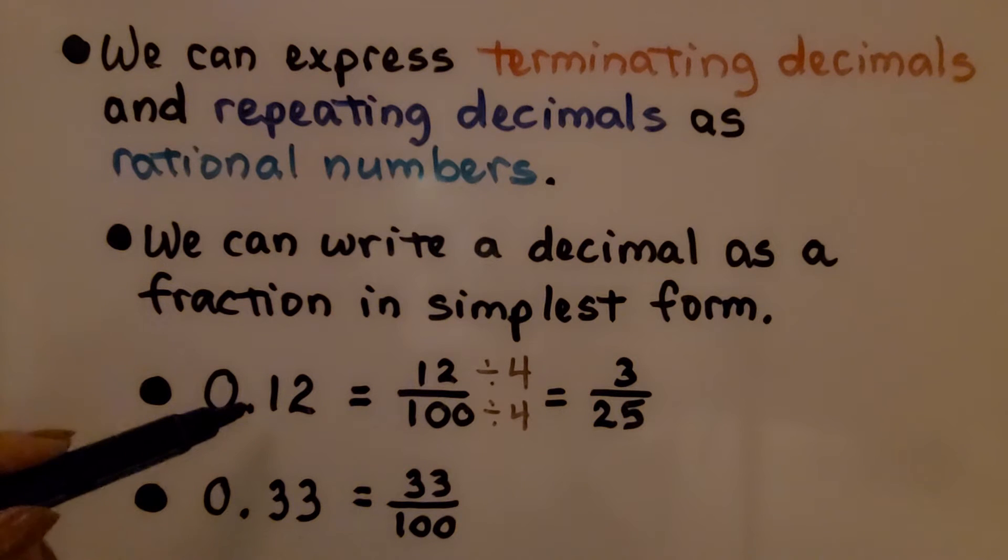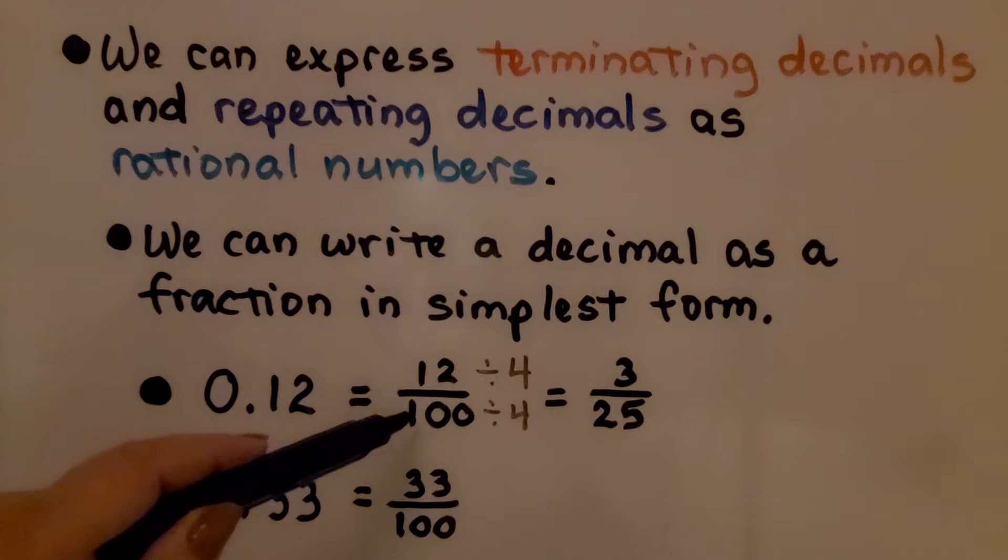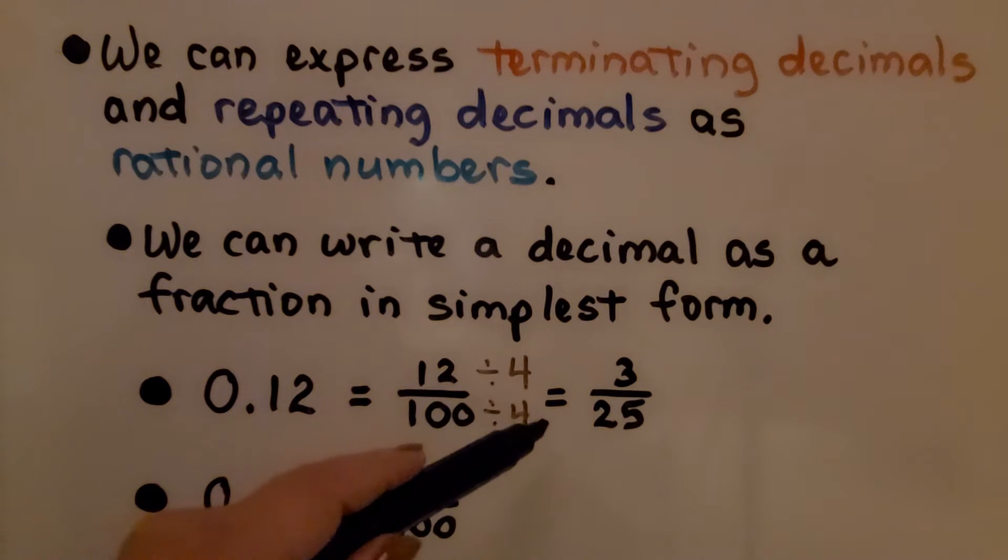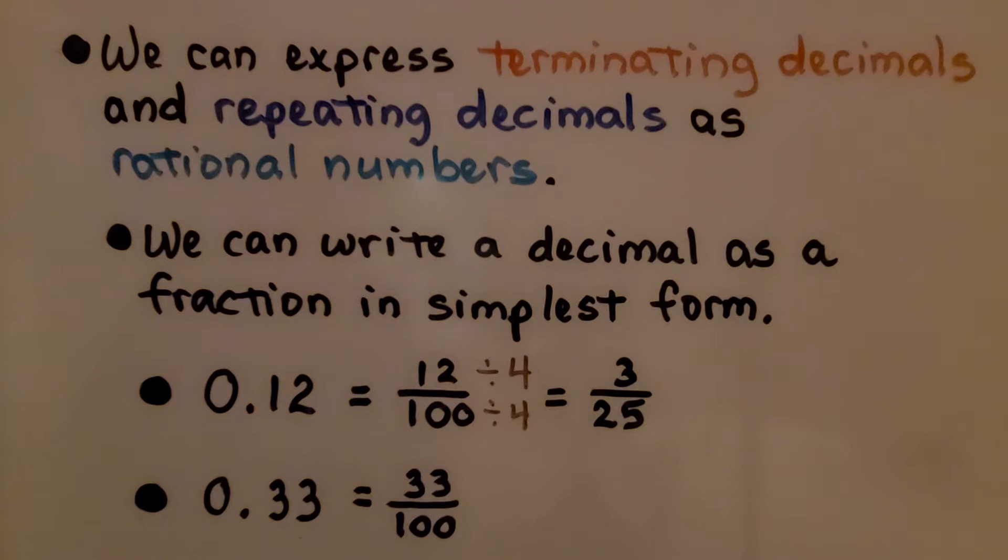If we have 12 hundredths, we just write the 12 as the numerator over 100 as the denominator. We can divide the numerator and denominator by 4 to write it in its simplest form as 3 25ths. For 33 hundredths, we just write the 33 over 100.